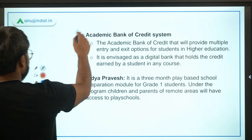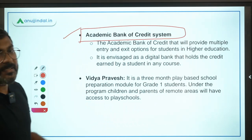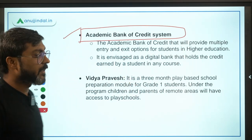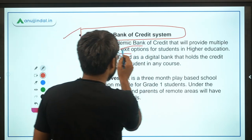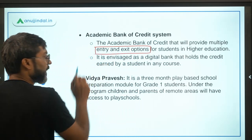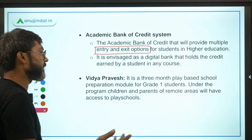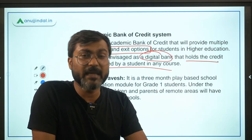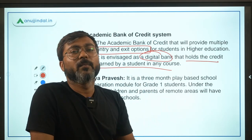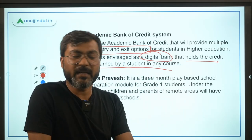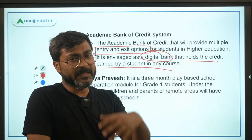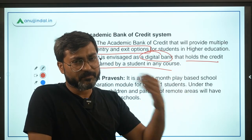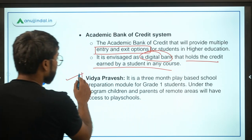First is the Academic Bank of Credit system, which is for students in higher education. It will provide multiple entry and exit options for higher education students and will act as a digital bank that holds the credits earned by a student in any course — whether by submitting assignments, projects, clearing exams, or internal assessments. All such credits will be stored in this digital database.